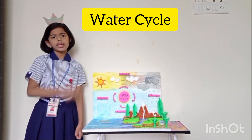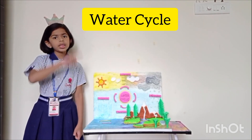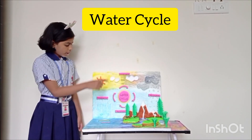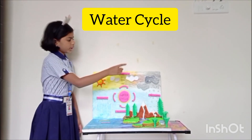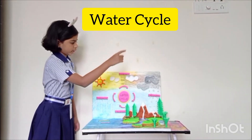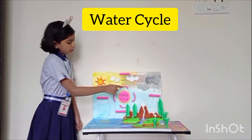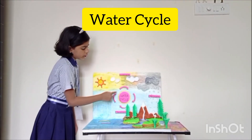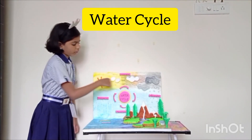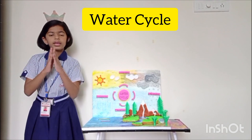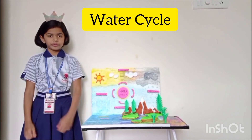The water cycle is a continuous process of evaporation, condensation and precipitation. The circulation of water is called the water cycle. Thank you.